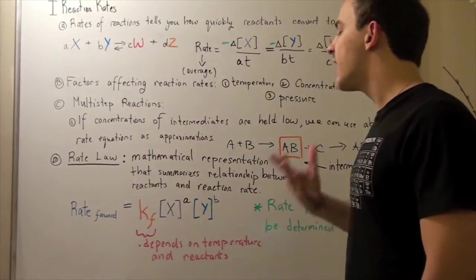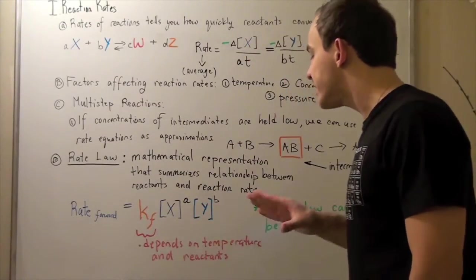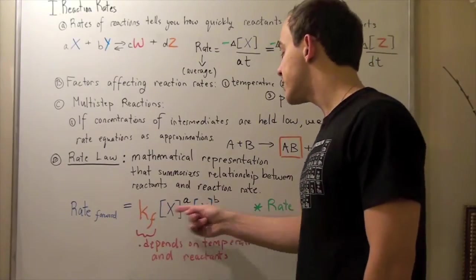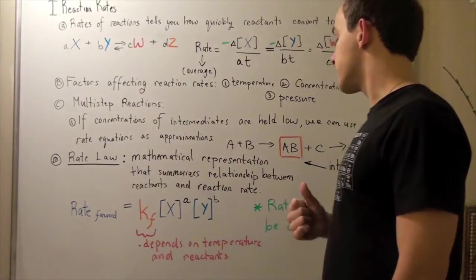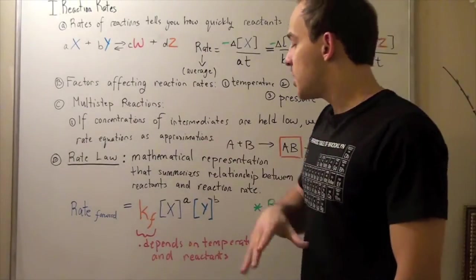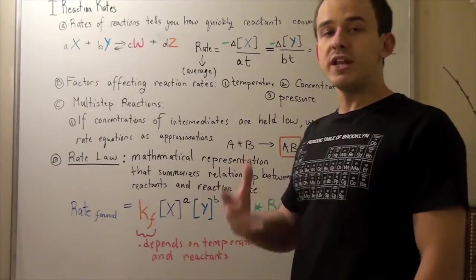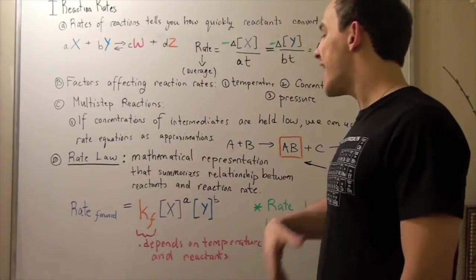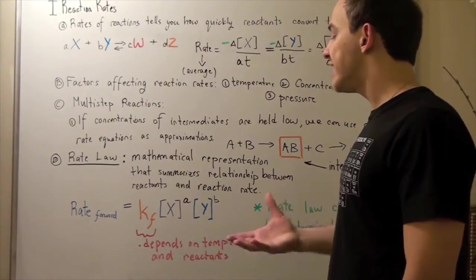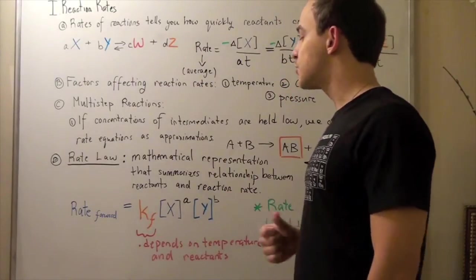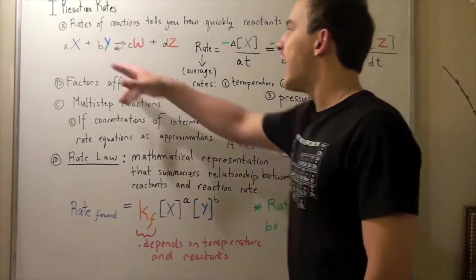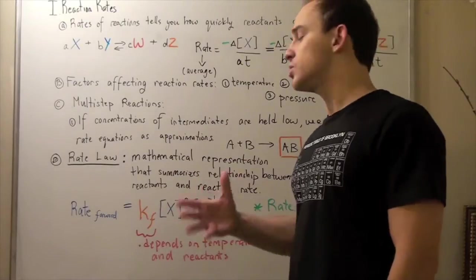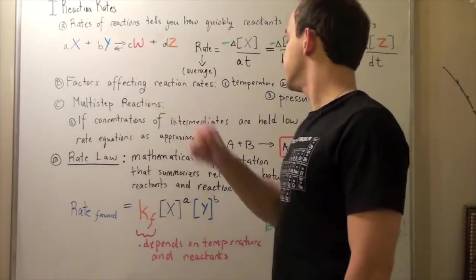This KF, our rate constant, depends strictly on temperature and types of reactants. It does not depend on the concentrations of reactants nor products. We saw from another video that KF is known as the Arrhenius equation. And it depends strictly on temperature. At the same temperature, we're going to use the same reactant for some given reaction. If we change our reactants, we're also going to have to change our KF, because our rate constant also depends on the types of reactants used.